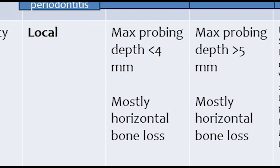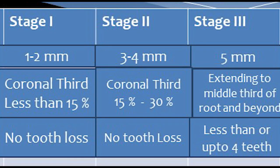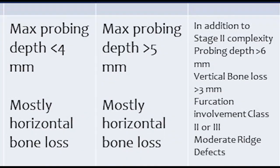Now for Stage 2, the clinical attachment loss, once again at the greatest site of bone loss, wherever the most destruction is, we will check for 3 to 4 mm loss. The coronal one-third RBL will be 15 to 30%, there is no tooth loss, the probing depth is greater than 5 mm, and again there is mostly horizontal bone loss. So this is Stage 2.